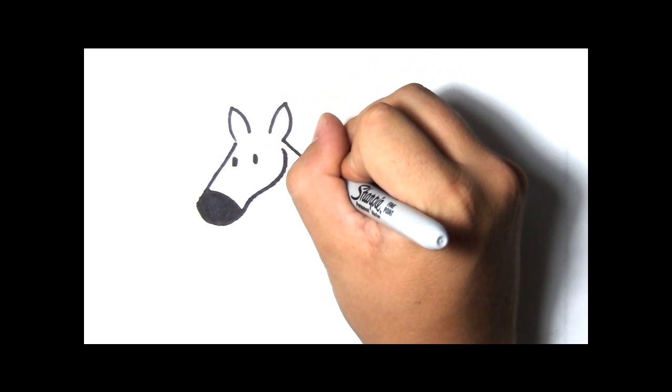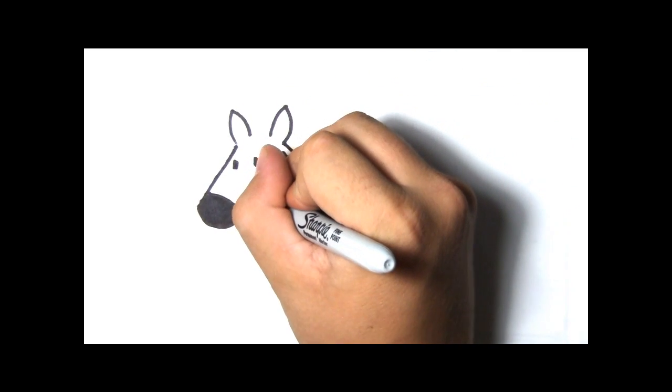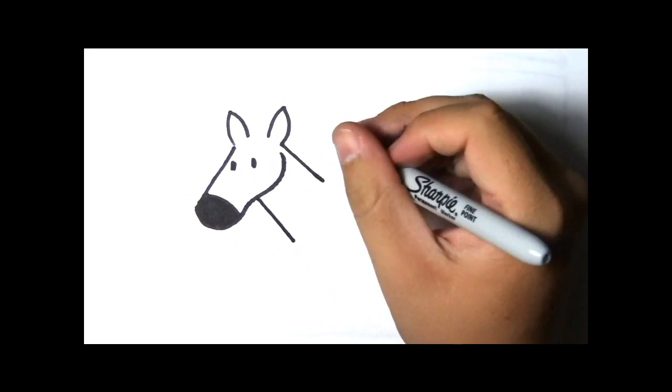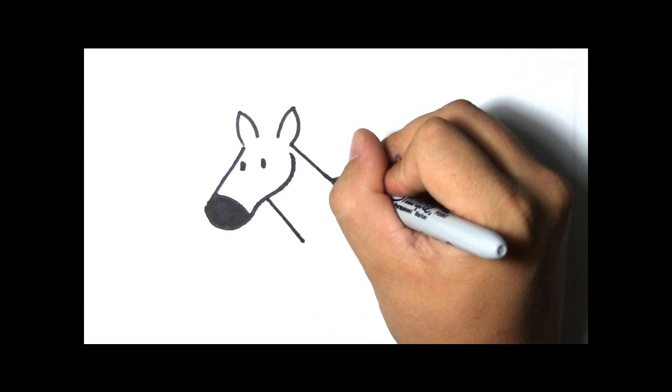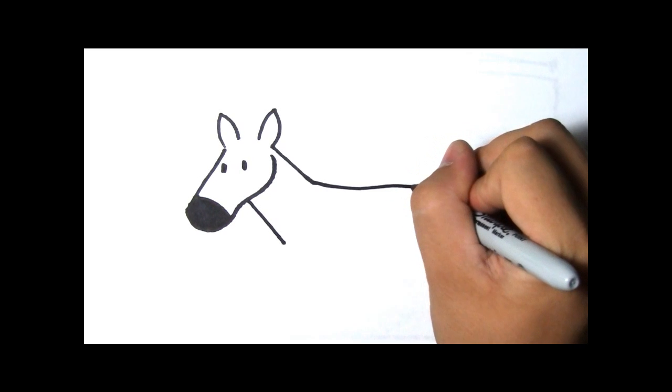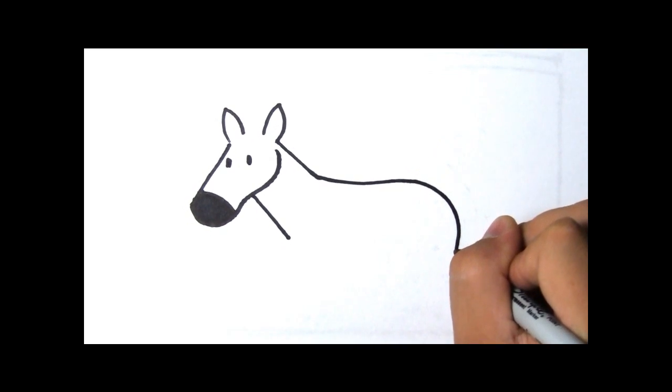Now let's start to draw the body of the zebra. Let's make two lines. And now the back of the zebra.